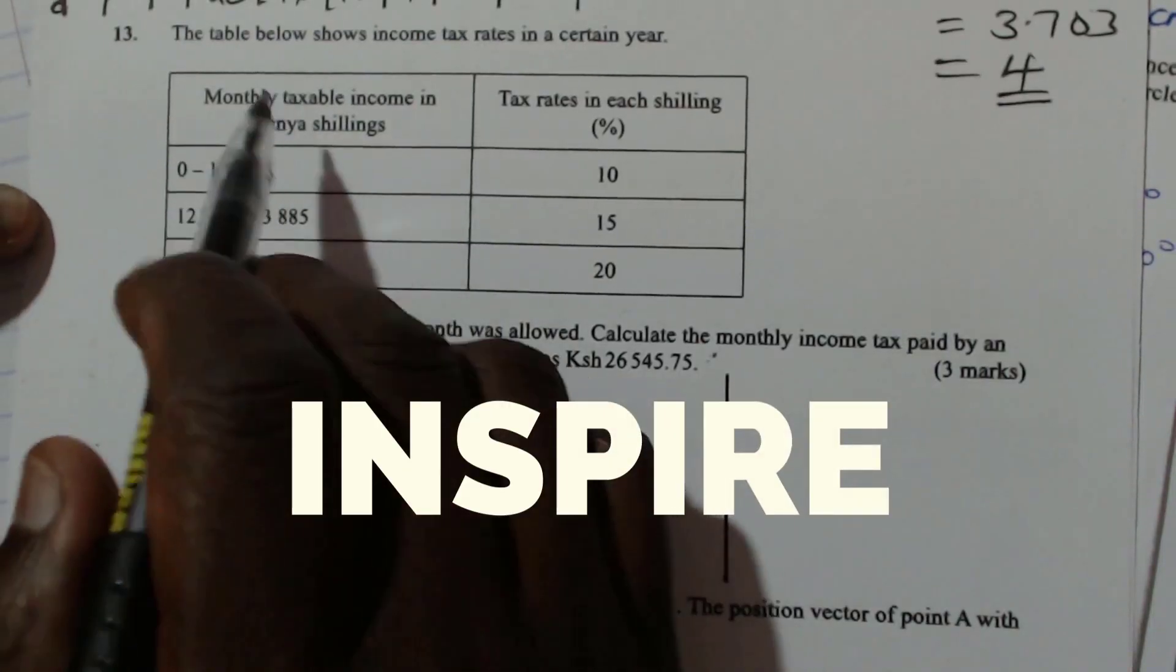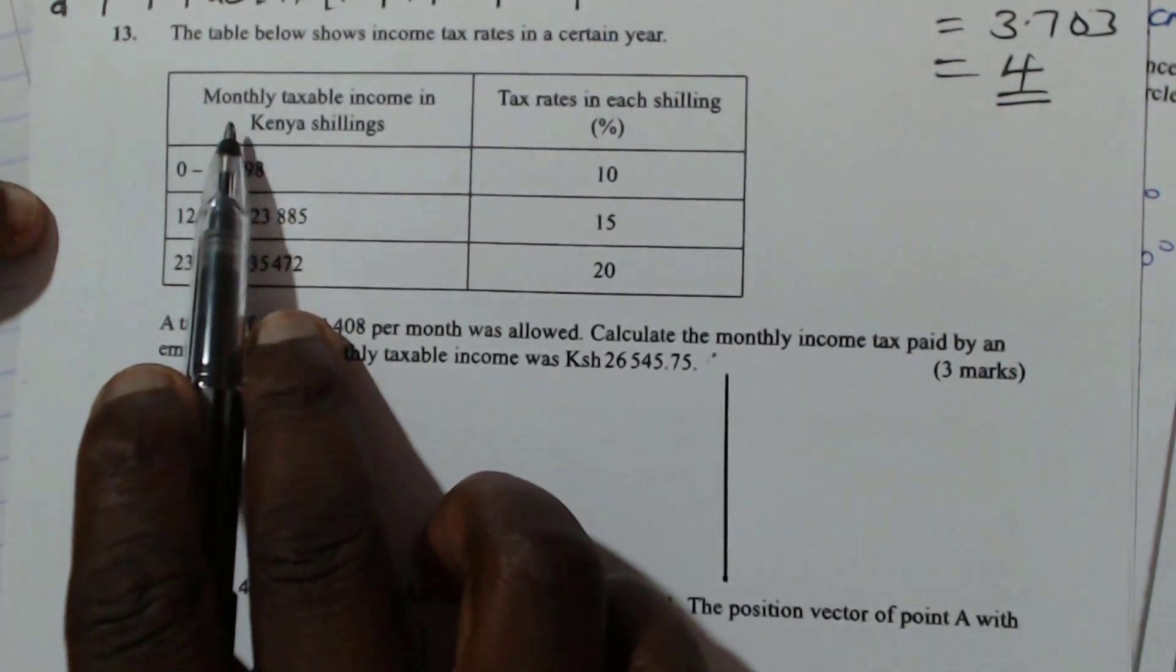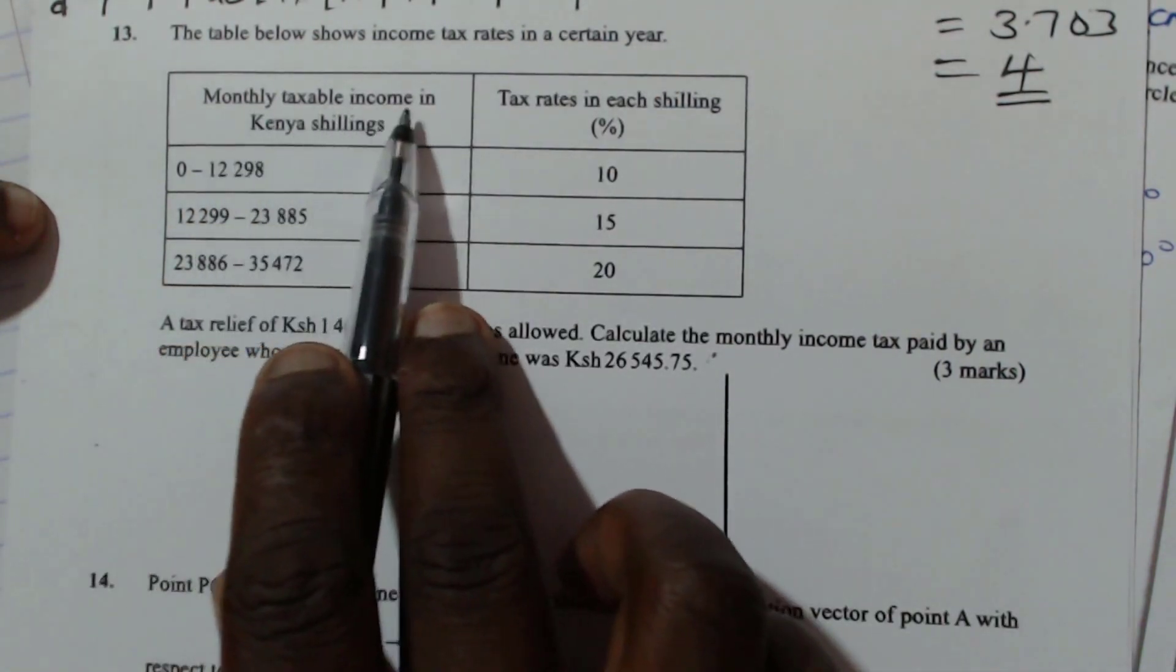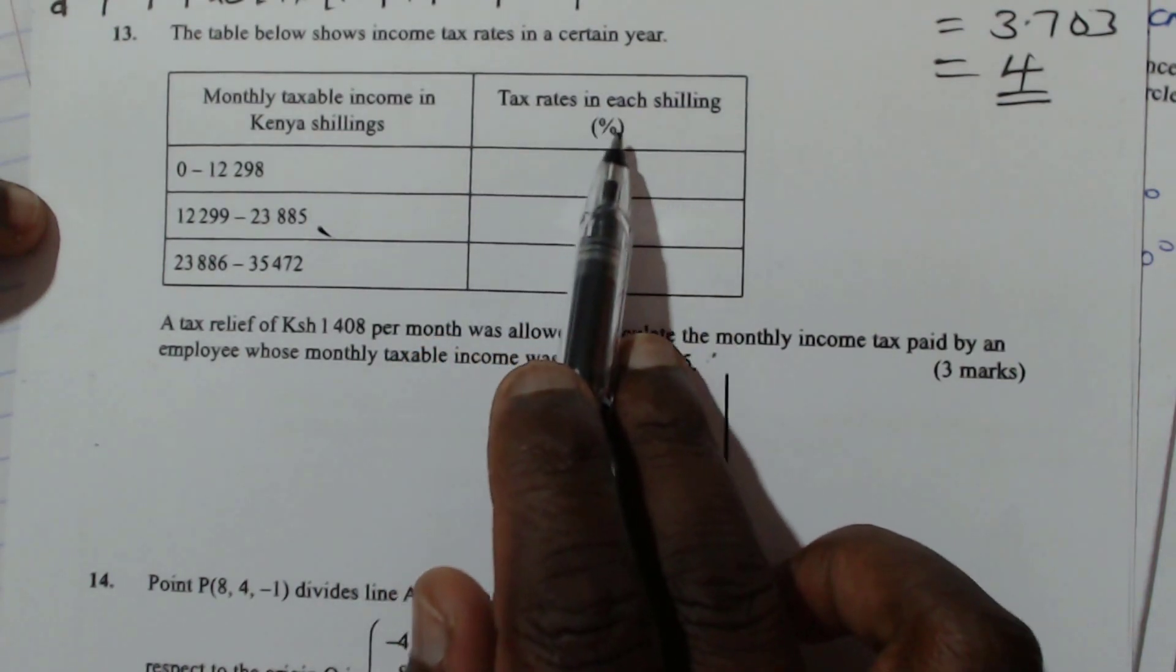Question 13. The table below shows income tax rates in a certain year. So the table is there, monthly taxable income in ten shillings, then the tax rates in each shilling in percentage.